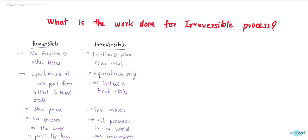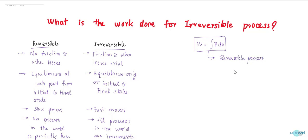Sometimes in an interview, this question will be asked: what is the work done for an irreversible process? Or indirectly, they will ask you: what is the work done for a reversible process? You would answer, W is equal to integral P dV. But you need to be certain that this formula is applicable only for a reversible process. So if the interviewer asks you where this formula is applicable, you should answer: only for reversible process.